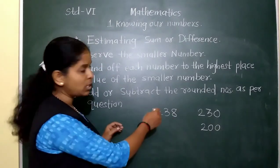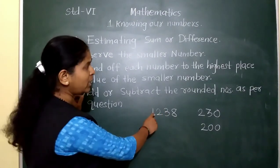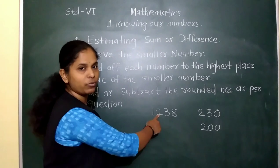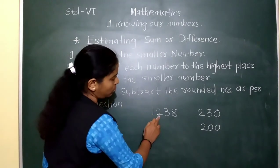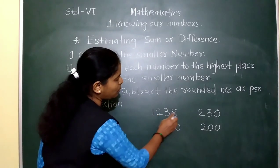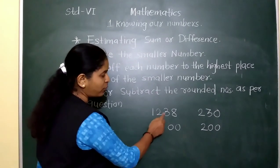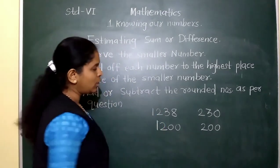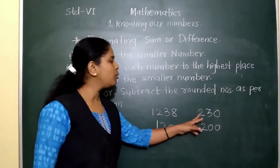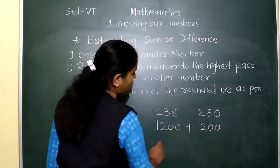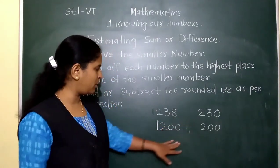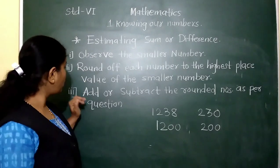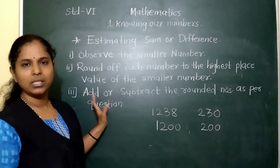For 1238, we also round off to the hundreds place. After the 100s digit 2, the next digit is 3, which is less than 5, so it remains unchanged. The lower digits become 0. So 1238 rounds to 1200. The third rule is: then add or subtract the rounded numbers as per the question. So 1200 plus 200 gives the estimated sum.